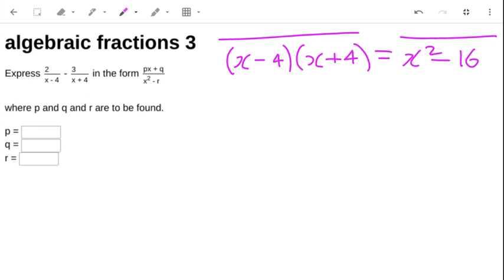So what we need to try and do is firstly, with the 2 over x minus 4, get an x plus 4 on the bottom. And the way to do that is multiply by this fraction here, x plus 4 on the top and the bottom.